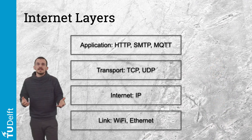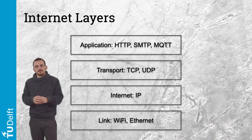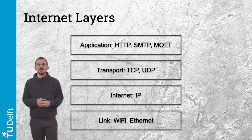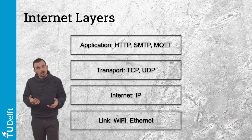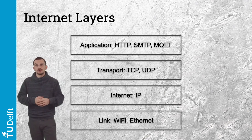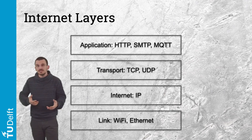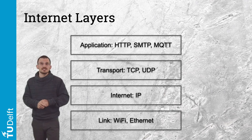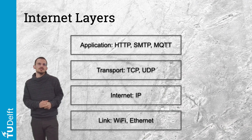Finally, we have the application layer. When every network detail is taken care of by the lower layers, application protocols take care of the communication — whether computers exchange web pages with HTTP, emails with SMTP, or sensor data with MQTT.